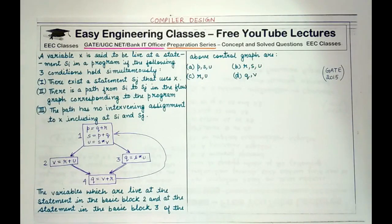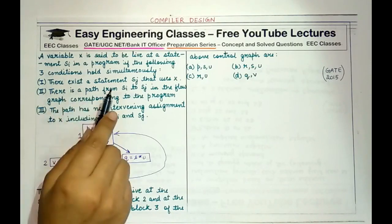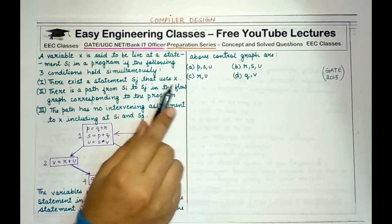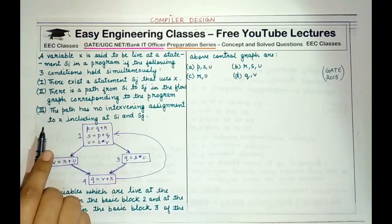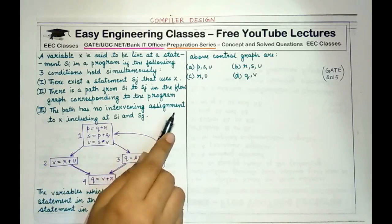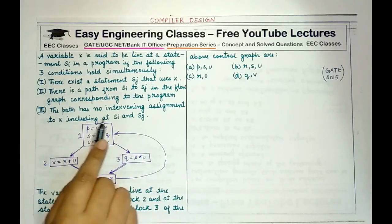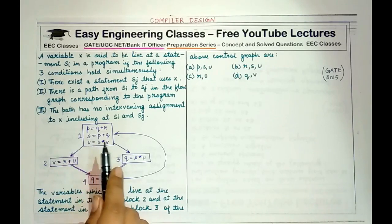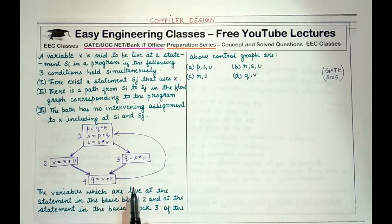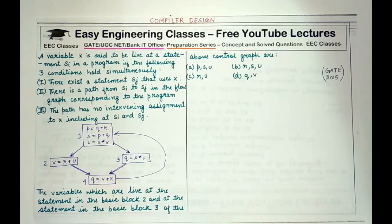The third question states that a variable x is live at statement si if three conditions hold simultaneously: there exists a statement sj that uses x; there is a path from si to sj in the flow graph; and that path has no intervening assignment to x, including at si and sj. We are given a set of four basic blocks and must find which variables are live at basic blocks 2 and 3.